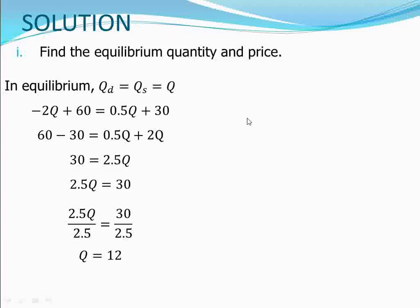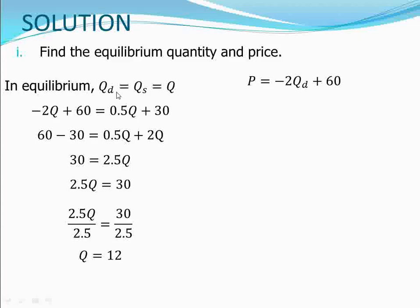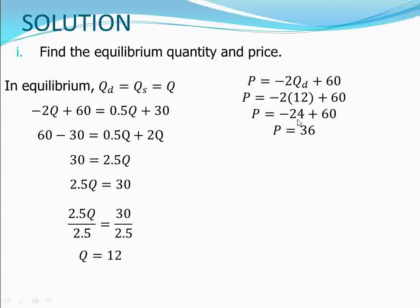To find the equilibrium price, we substitute Q = 12 into either the demand or supply function. In this presentation I'll use both equations to verify the price is the same from both. Using the demand function first — since in equilibrium QD = Q = 12 — we get P = -2 × 12 + 60, which simplifies to -24 + 60.